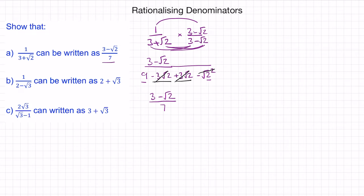So for question B, we have 1 over 2 minus root 3. To rationalize this denominator, we need to cancel out the root 3. So we multiply the numerator and denominator by 2 plus root 3. We've, in effect, multiplied it by 1, and this plus root 3 is the opposite of the minus root 3.